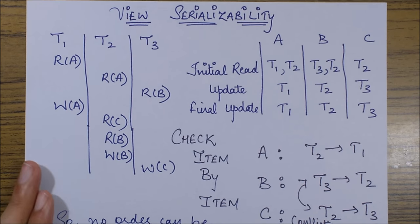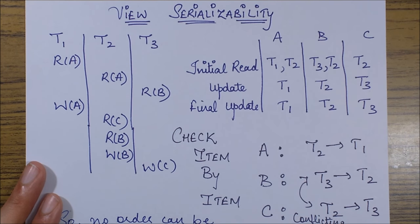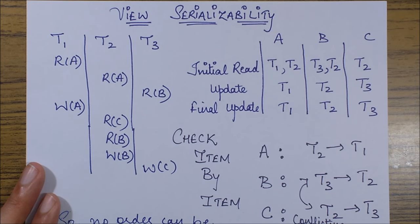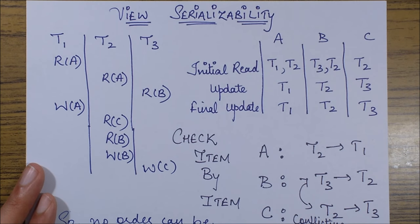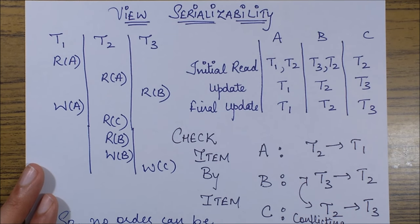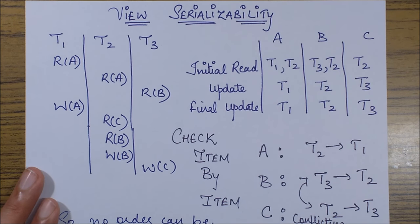We have a schedule with three transactions T1, T2, T3 executing concurrently. The best approach is to first check for conflict serializability and then move on to view serializability. In the previous session we found that this schedule is non-conflict-serializable, and therefore we need to check for view serializability.